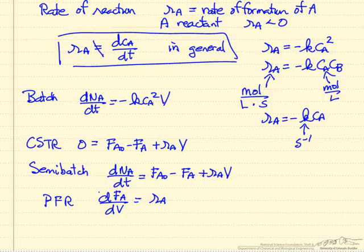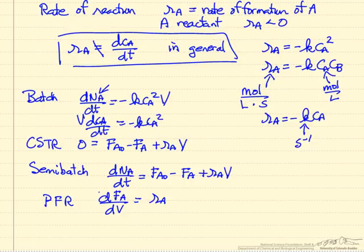I've listed the basic mass balances for a batch reactor where N sub A is the number of moles of A in the reactor, V is the volume contents of the reactor. If this is liquid phase, then the left side can be written in terms of concentration.